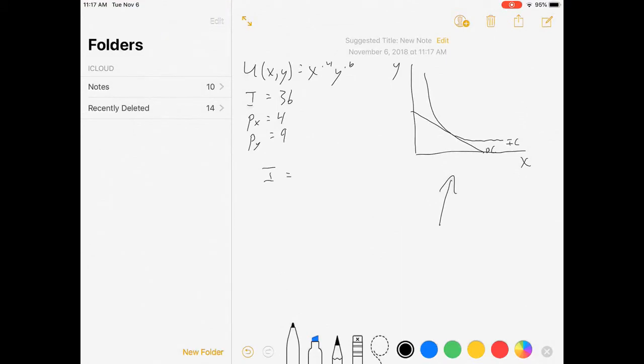I is equal to px times good x plus py times good y. In this case, 36 is equal to 4x plus 9y. If I spend all my money on good x, I can buy 9 of them. If I don't buy any x and I spend all my money on good y, I can buy 4 of them.